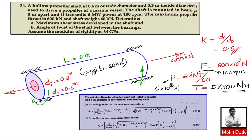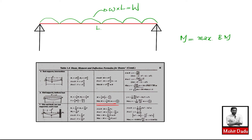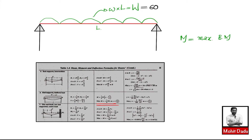Next, the bending moment is evaluated. The shaft weight of 60 kilonewtons acts as a uniformly distributed load (UDL) over the 5 m length. If w is the intensity of the distributed load and l is the length, then w × l = total weight W = 60 kilonewtons.